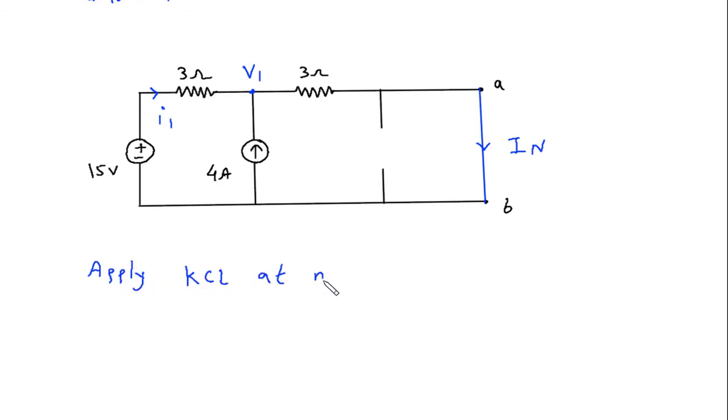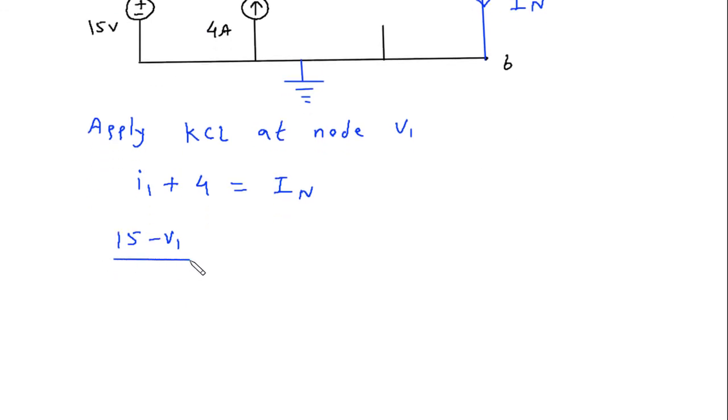Apply KCL at node V1. So at this node we will apply KCL. Summation of all the entering current: entering current is I1 plus 4 is equal to leaving current is In. So I1 is equal to 15 minus V1 by 3 plus 4 is equal to In.